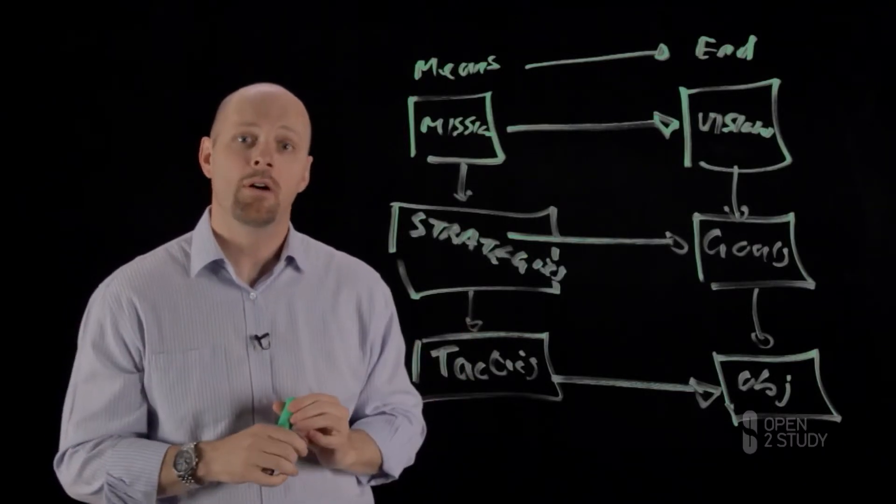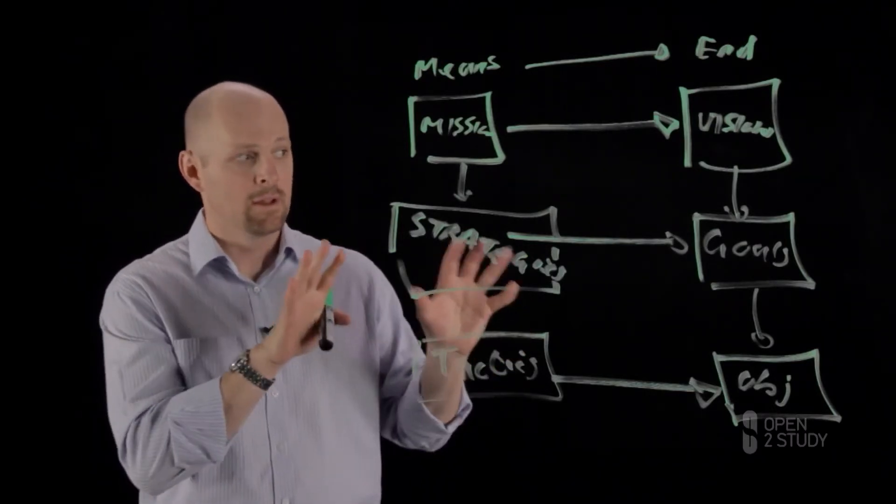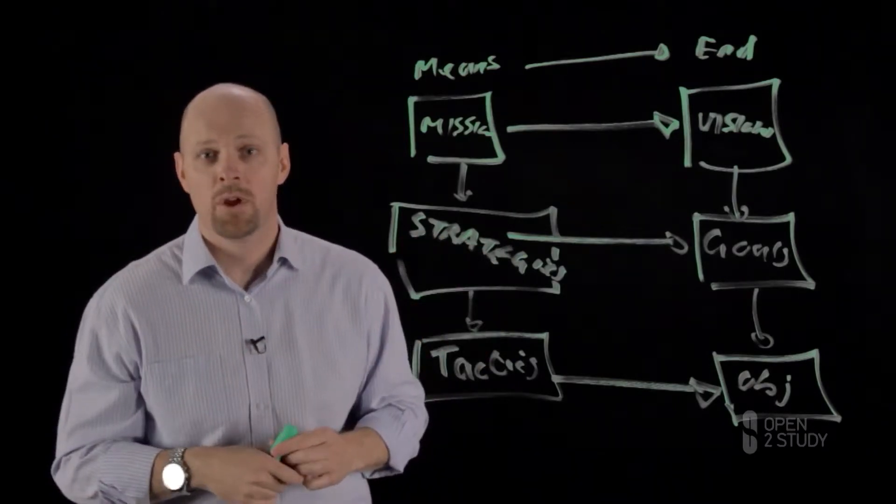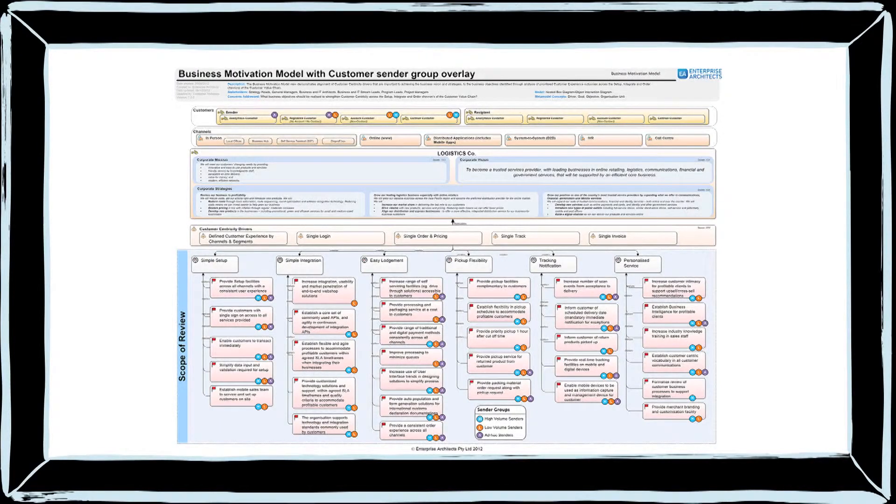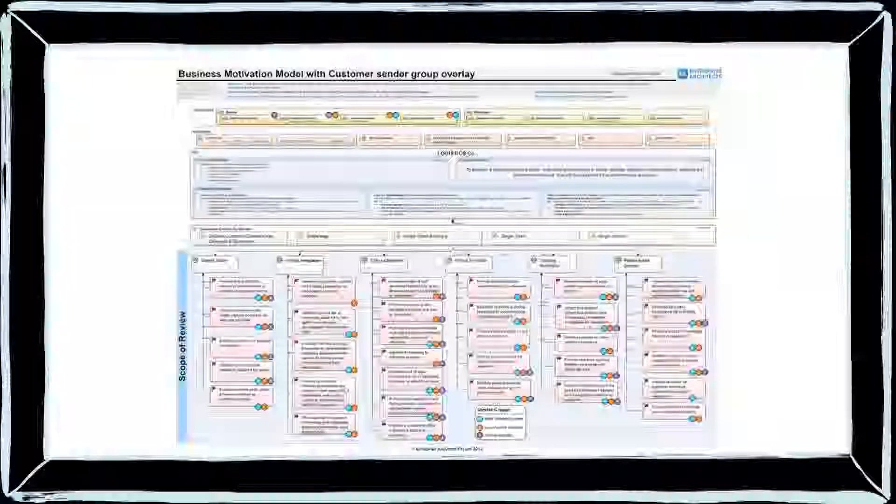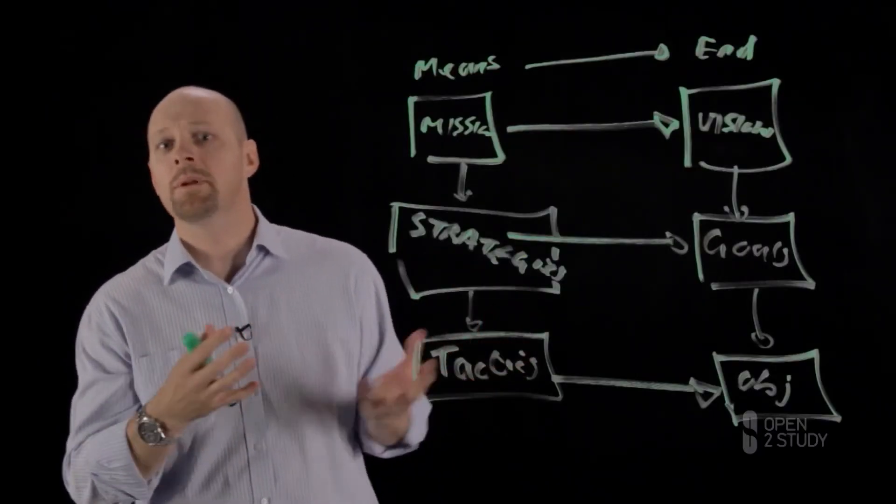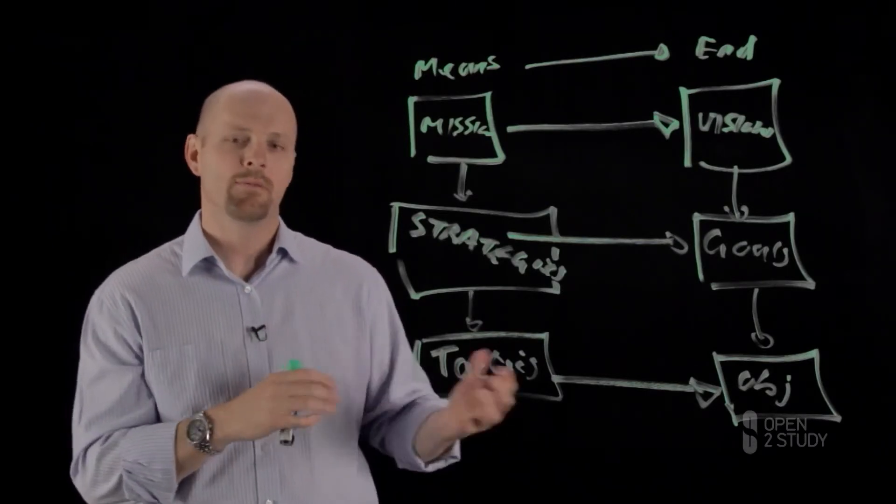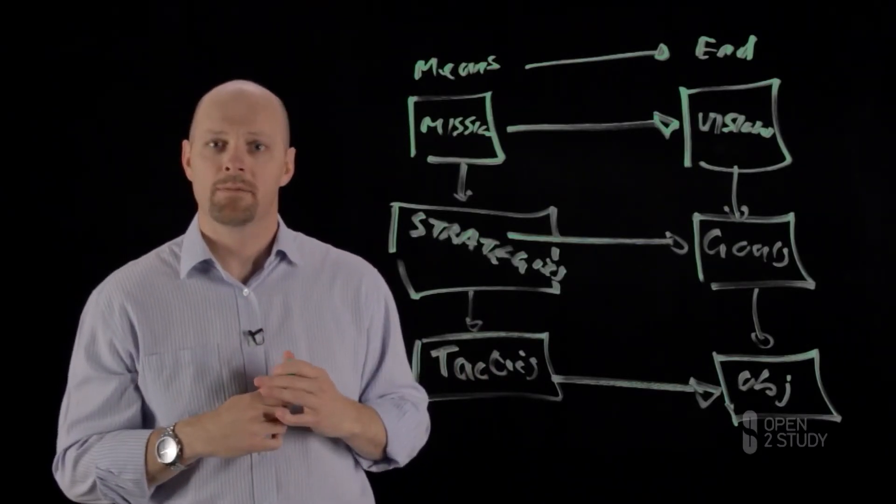When you talk to your strategic office or business people, this is a good model for them to center on as you begin to extract information from them. As part of the assets, we've got an example showing what a documented business motivation model could look like. But as part of an exercise, why don't you drop down into the forum and have a discussion around how you would document a business model. What's been your experience around documenting the motivation of an organization?